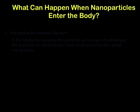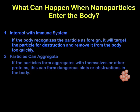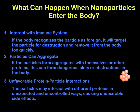There are many potential side effects of putting nanoparticles in the body, and they are not fully understood. Here are three important ones we do know about. It is possible for the particle to interact with the immune system, and if the body recognizes the particle as foreign, it will target the particle for destruction or remove it from the body too quickly, potentially before it finishes its purpose. It is also possible that the particles can aggregate inside the body with other particles or with proteins, forming dangerous clots or other obstructions. It is also possible that there would be unfavorable protein-particle interactions, causing undesirable side effects.